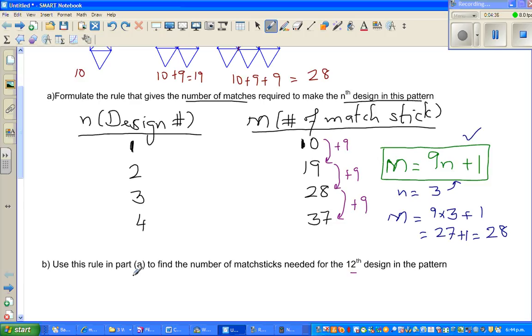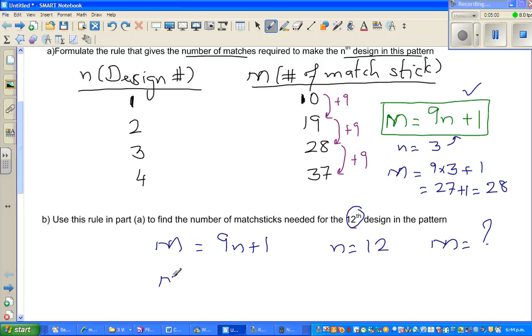Now, the next question is, use this rule in part A to find the number of matchsticks for the 12th design. Basically they're asking you, if m is 9n plus 1 and n is 12, what is m? You have to simply put 12 into this equation. So m would be 9 times 12 plus 1. You can use a calculator. 9 times 12 is same as 12 times 9, which is 108. I'll show this on calculator, which is 109.